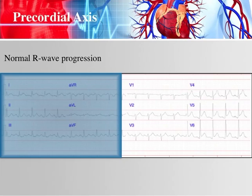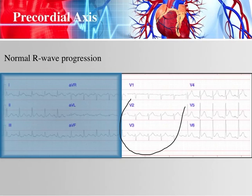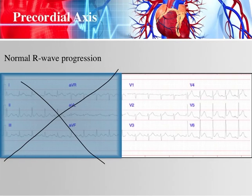Here's an example of normal R wave progression. We see mostly negative in V1, mostly positive in V6, and the transition occurs somewhere between V2 and V4 — V2 is mostly negative, V4 is mostly positive. That's normal R wave progression. We're not paying attention to the limb leads for this discussion.